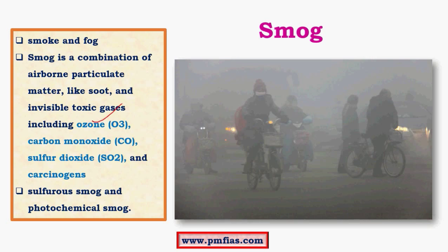Ozone is usually present in the stratosphere and is a friend if it is in the stratosphere, but becomes an enemy if it is in the lower levels of the atmosphere because it is a greenhouse gas. There are two kinds of smog: sulfurous smog and photochemical smog. Sulfurous smog has mainly sulfur dioxide, whereas photochemical smog has a greater amount of nitrogen oxides.